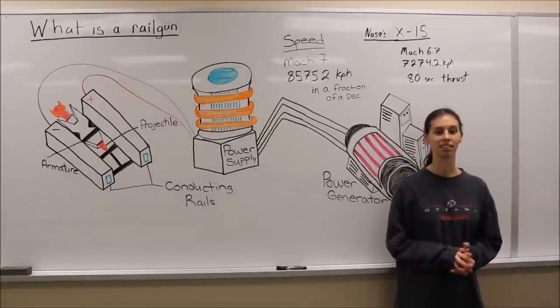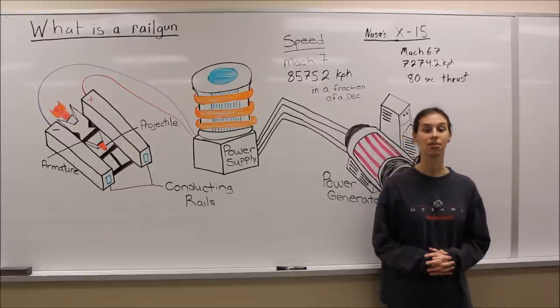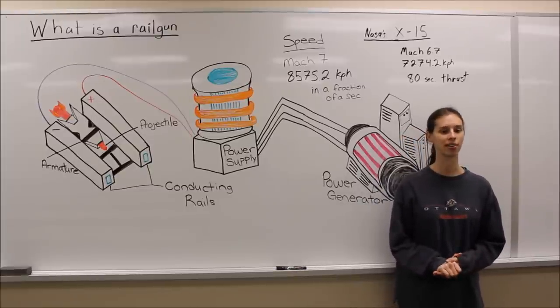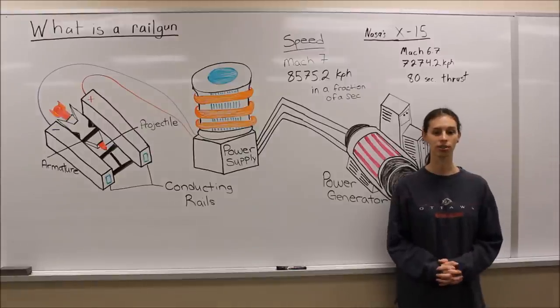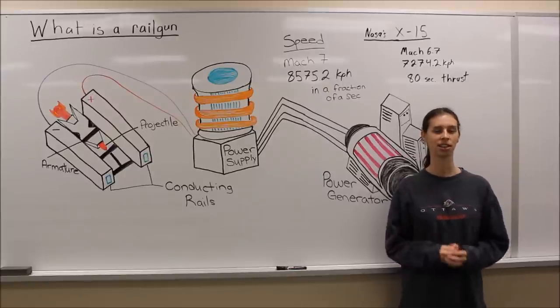The fastest that man has ever traveled was in an aircraft called NASA's X-15, which went to a speed of Mach 6.7, which is 7,274.2 kilometers per hour. It reached that speed after 80 seconds of thrust.